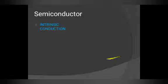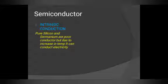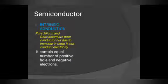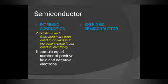Semiconductors are of two types: intrinsic and extrinsic. Intrinsic semiconductors — pure silicon and germanium — are poor conductors, but due to increase in temperature they can conduct electricity. Silicon chips are used in mobiles and laptops. Intrinsic semiconductors contain equal numbers of positive holes and negative electrons, and by increasing energy internally, they conduct — that is what intrinsic means.